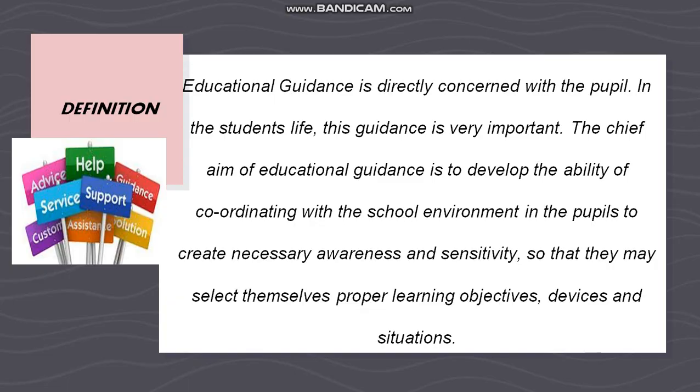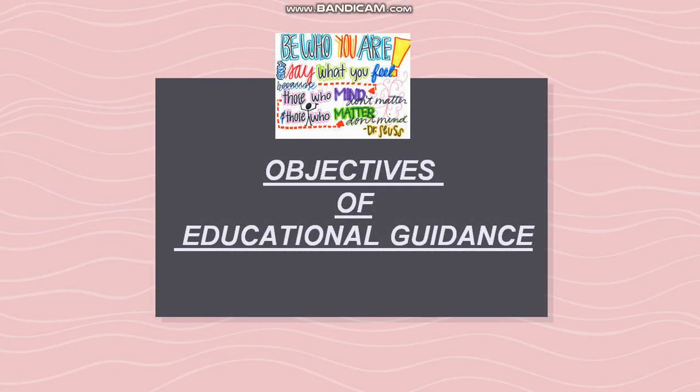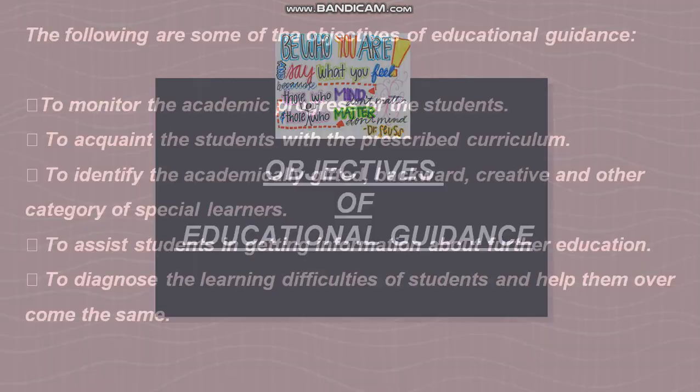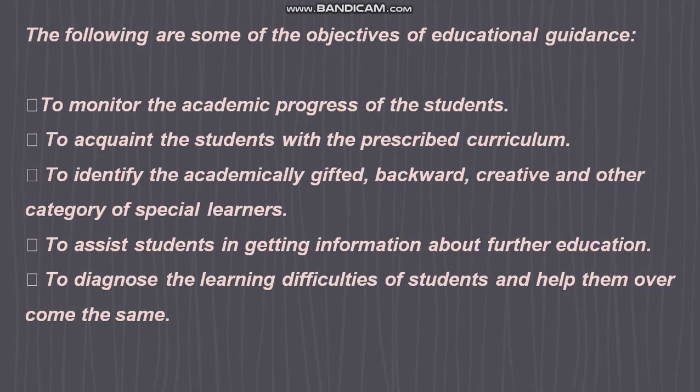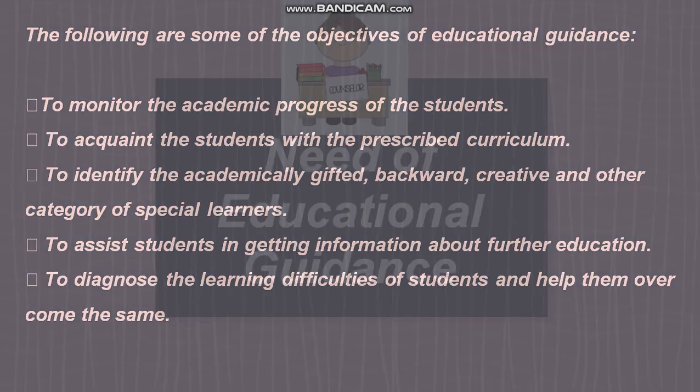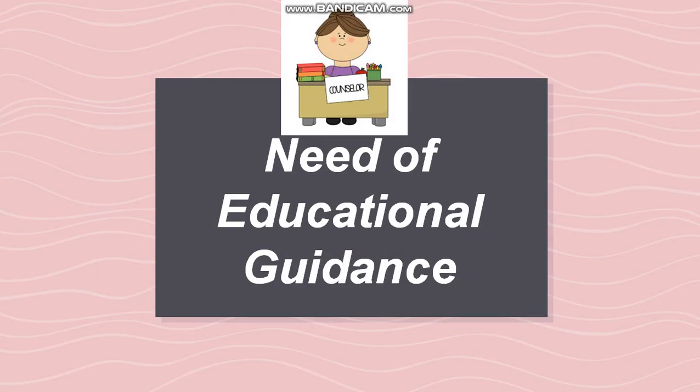Now we will discuss about the objectives of educational guidance. Number one is to monitor the academic progress of the students. Number two, to acquaint the students with the prescribed curriculum. Number three, to identify the academically gifted, backward, creative and other categories of special learners. Number four, to assist students in getting information about further education. Number five, to diagnose the learning difficulties of students and help them overcome these where required.